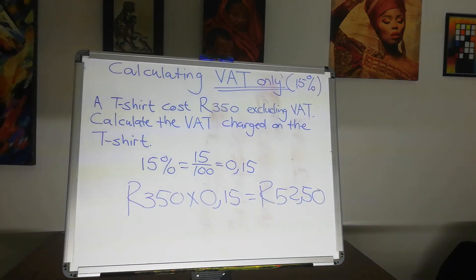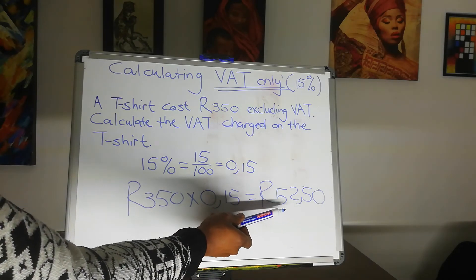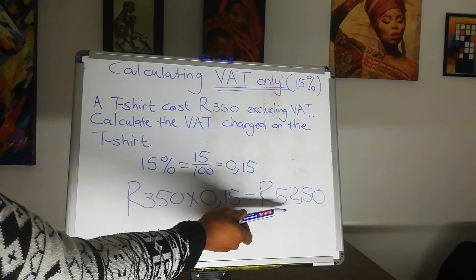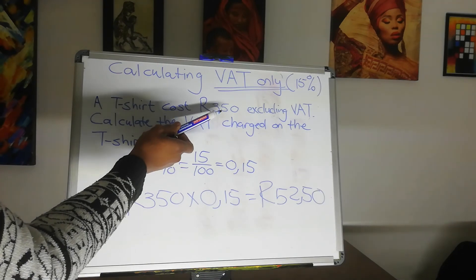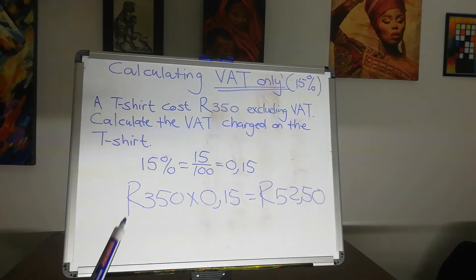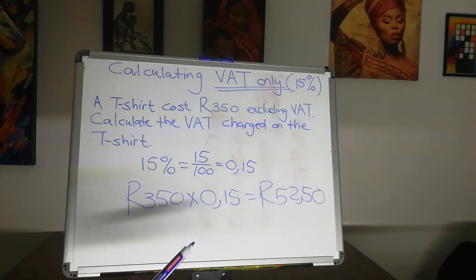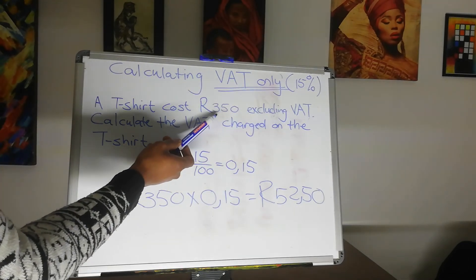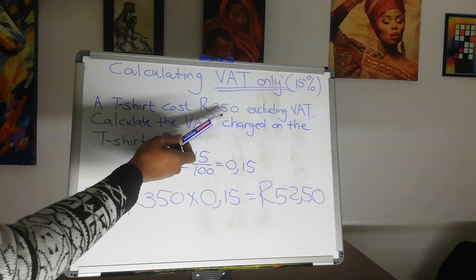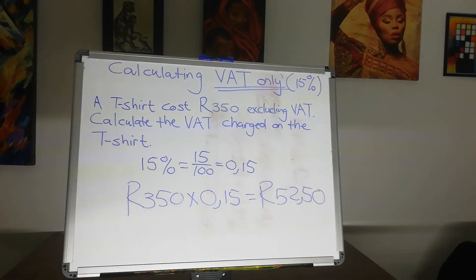And that is how you calculate the VAT. You will notice that the answer we get is much smaller than the 350, which is telling us that we are on the right path, because 15% of 350 was calculated. Therefore, it must be a smaller amount. Keep going. Thank you.